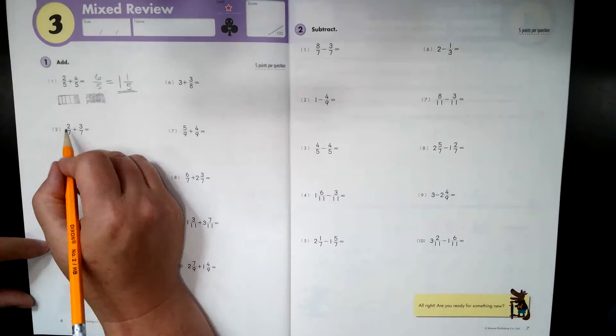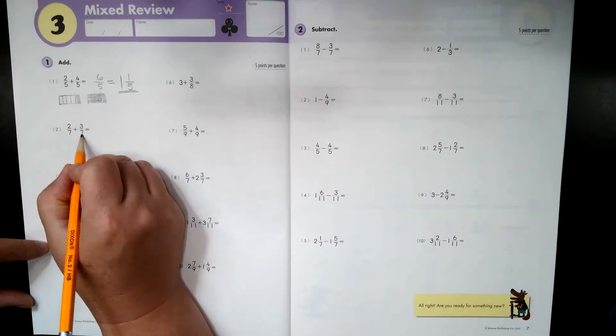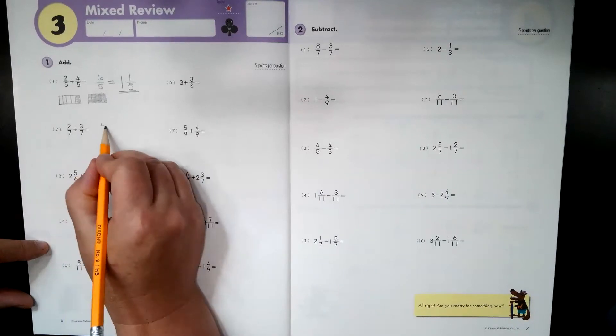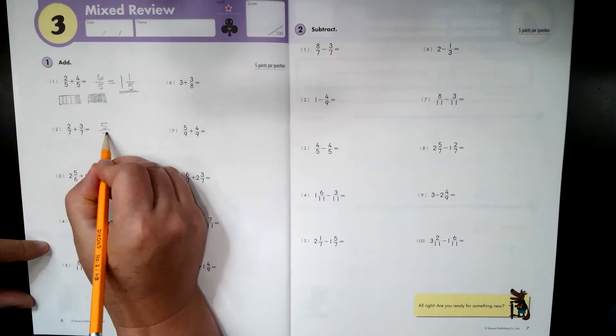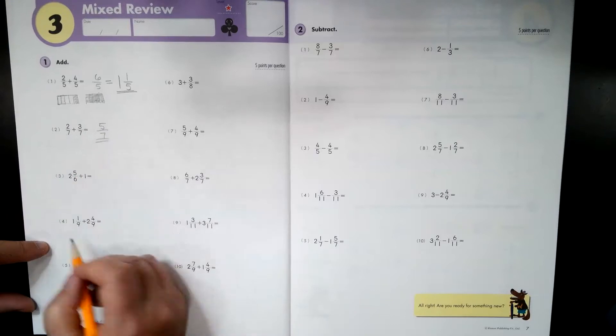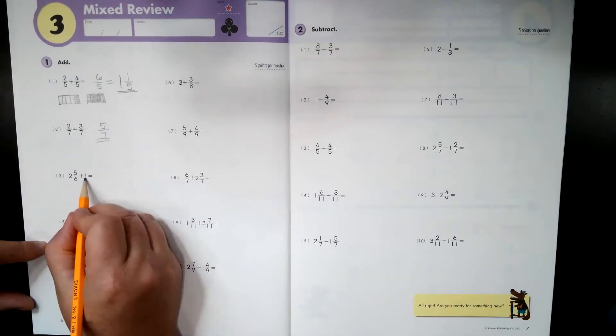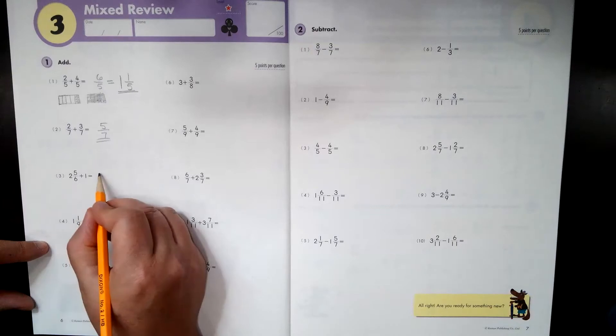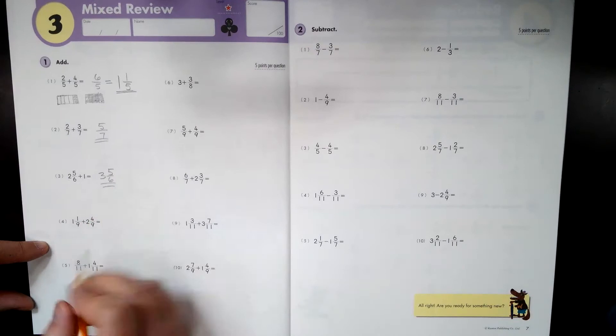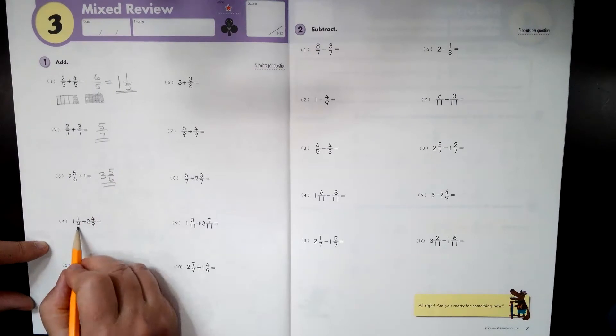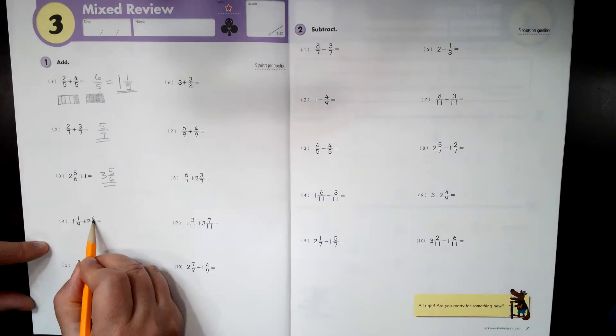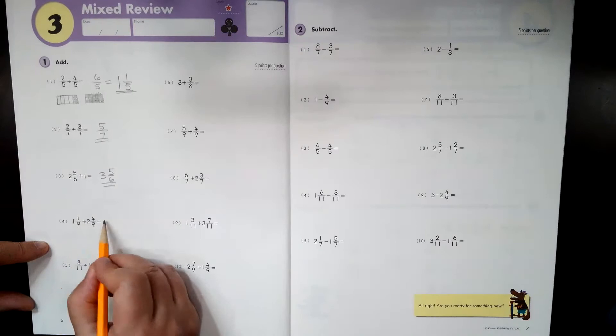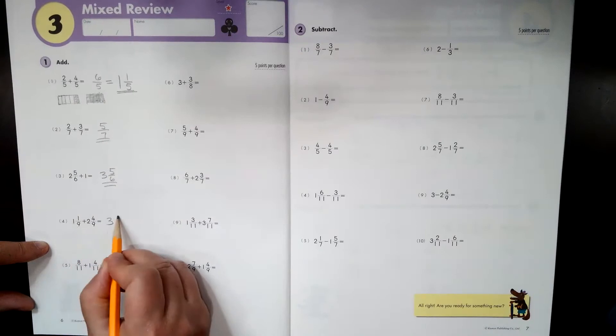So let's move on to number two. Denominators are the same. Add across the top. Two plus three is five over seven. Easy peasy. You can do this. All right, whole number. We're only adding a whole number. That's easy. Two plus one is three. The five sixths doesn't change.